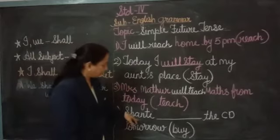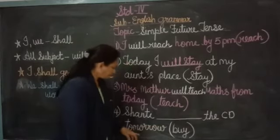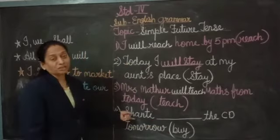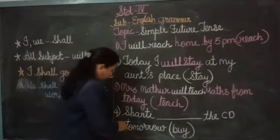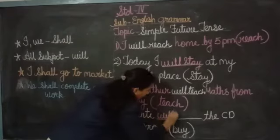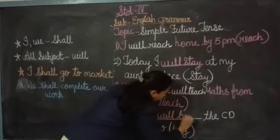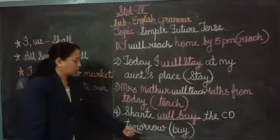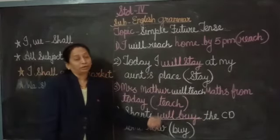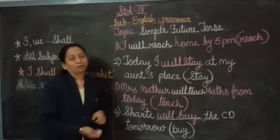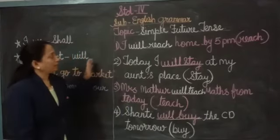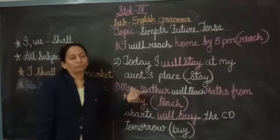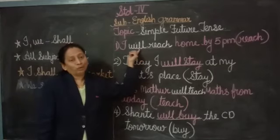The fourth one: 'Shanti dash the city tomorrow' — the word is 'buy'. She has not bought yet, so we write: 'Shanti will buy the city tomorrow.' We are talking about what Shanti is going to do tomorrow — it is future tense. So this lesson is very easy. Whenever we talk about future tense, we use the word 'will'.